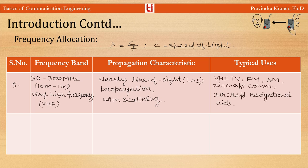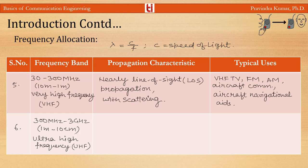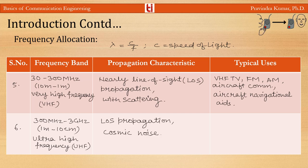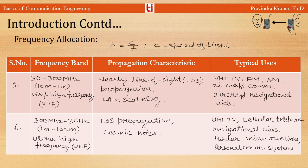The band 300 MHz–3 GHz (1 m–10 cm) is the Ultra High Frequency (UHF) band. It also requires line-of-sight propagation and has cosmic noise present. UHF is used for UHF TV, cellular telephone, navigational aids, radar, microwave links, and personal communication systems.